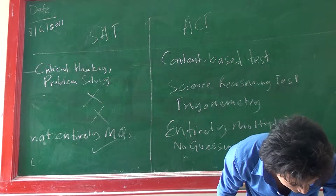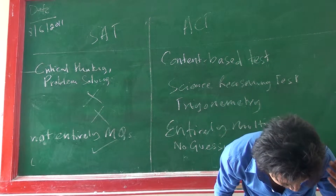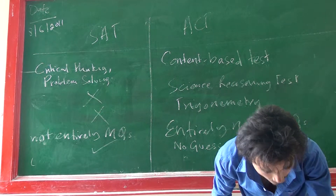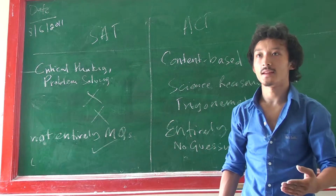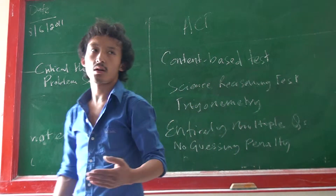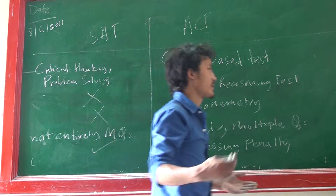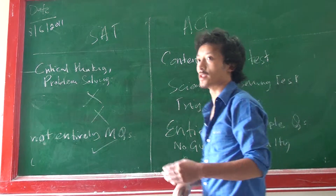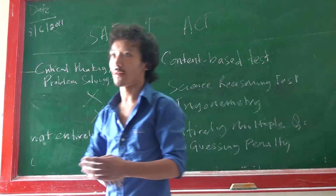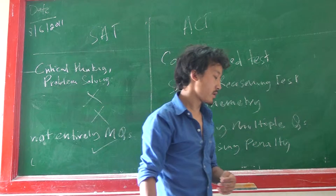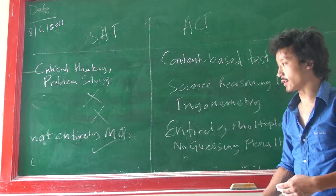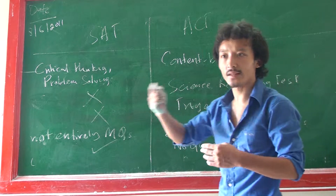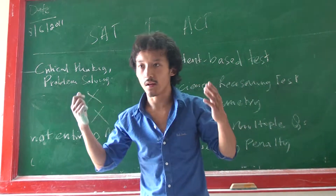ACT tests your English grammar; the SAT does not. But SAT tests vocabulary much more than ACT. Many students say that in SAT you need to learn so many vocabulary words, and that's why they want to skip ACT and take SAT instead. But vocabulary is not the only thing — you can catch up on vocabularies quite easily if you know the techniques.